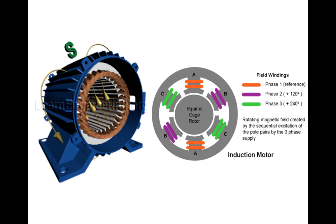In the state of a modern induction machine, we don't really see those salient poles. The internal diameter is actually smooth — you don't see poles sticking out. But the wiring inside the stator actually produces magnetic fields that are equivalent to those produced using those salient poles.